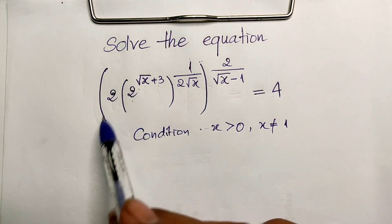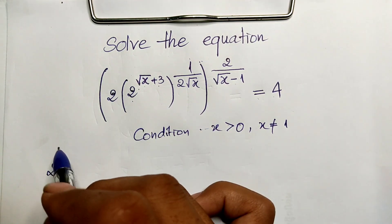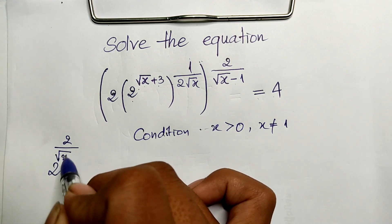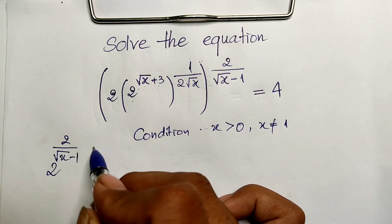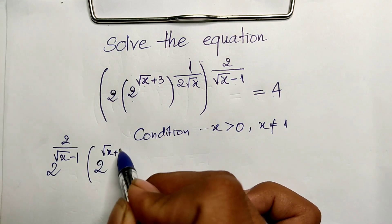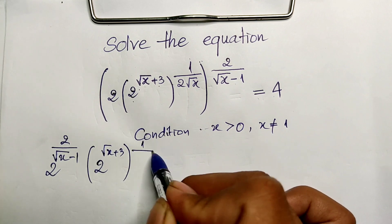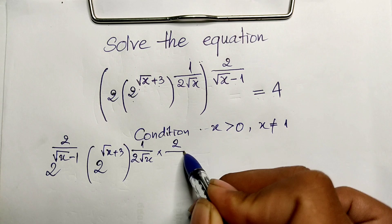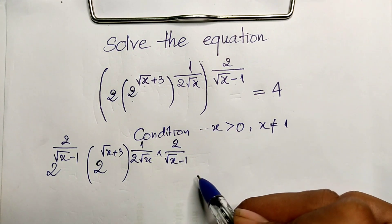We can rewrite the equation as: 2 to the power of (2 divided by square root of h minus 1), multiplied by 2 to the power of (square root of h plus 3) to the 1/2, multiplied by 2, divided by square root of h minus 1, equals 4.